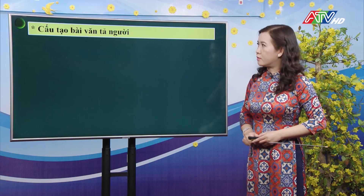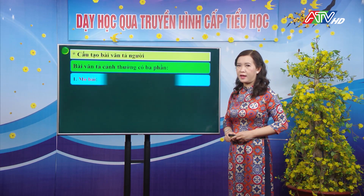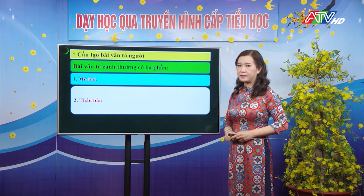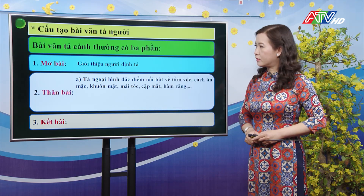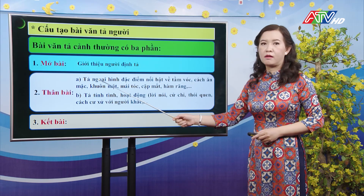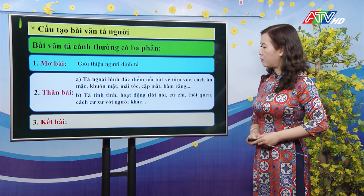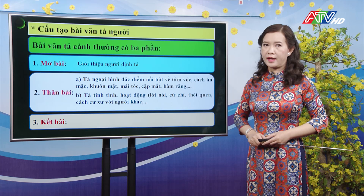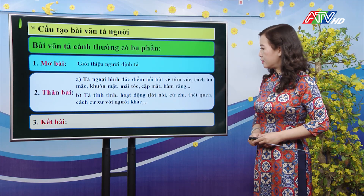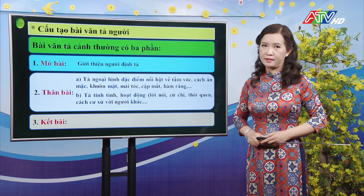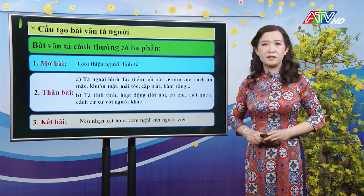Cô sẽ nhắc lại cho các con về cấu tạo của bài văn tả người. Bài văn tả người cũng thường có ba phần: mở bài, thân bài và kết bài. Mở bài: giới thiệu người định tả. Thân bài có hai phần: phần thứ nhất tả ngoại hình — đặc điểm nổi bật về tầm vóc, cách ăn mặc, khuôn mặt, mái tóc, cặp mắt, hàm răng; phần thứ hai tả tính tình và hoạt động thông qua lời nói, cử chỉ, thói quen, cách cư xử với người khác. Kết bài: nêu nhận xét hoặc cảm nghĩ về người mình định tả.